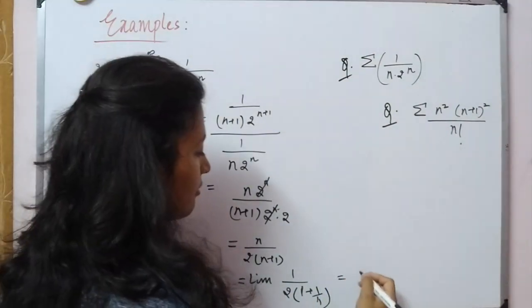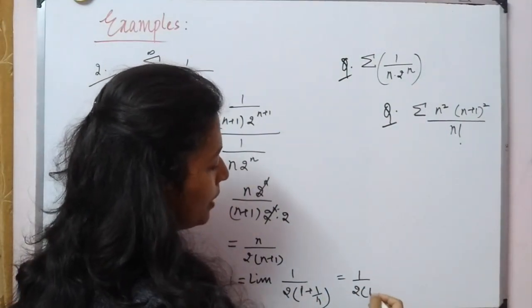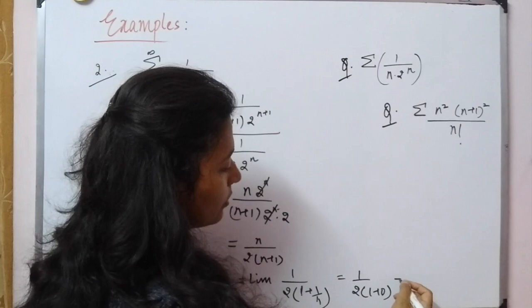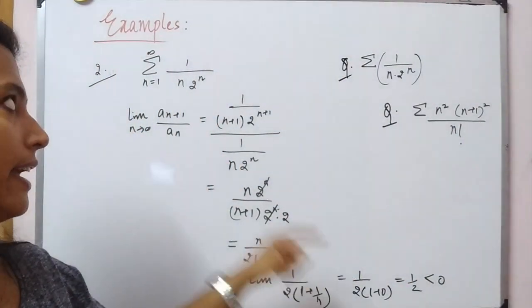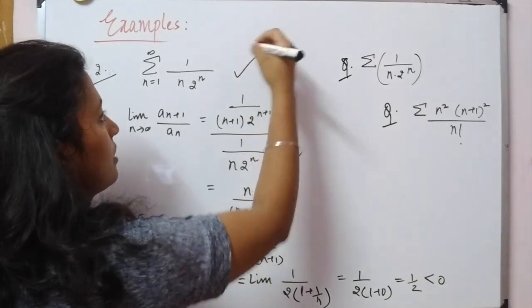Applying the limit as n tends to infinity, 1/n becomes 0, leaving us with 1/2, which is less than 1. This implies this series also converges.